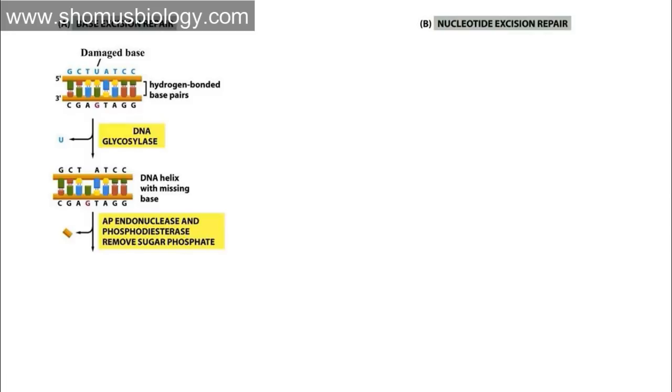So in this site, AP endonuclease is an enzyme that cuts this phosphodiester backbone and it will remove the sugar phosphate from the backbone. As a result of which we have now only one base gap.